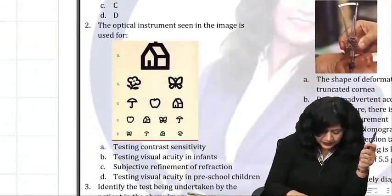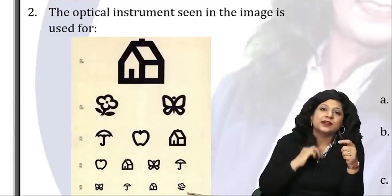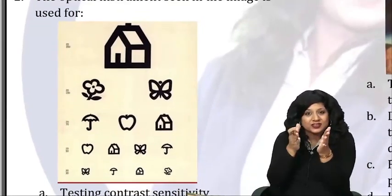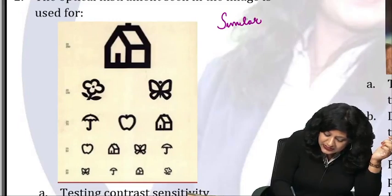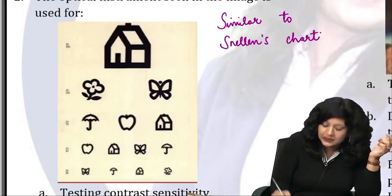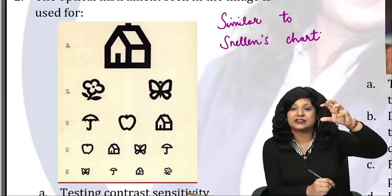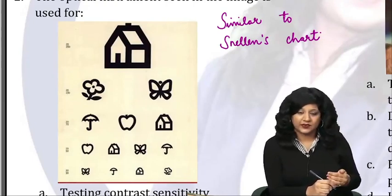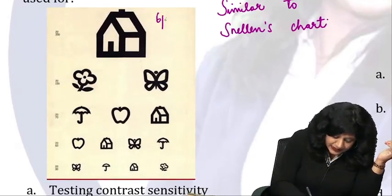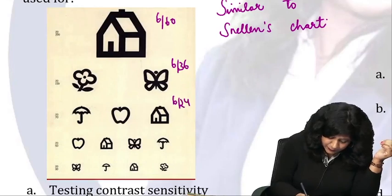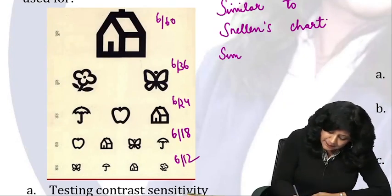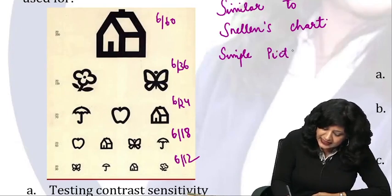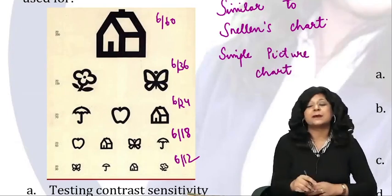Now, question number two. I think this is a very simple question. The optical instrument shown has images going decrease and decrease in size — this is similar to the Snellen's chart, where the topmost letter is largest and the size goes on decreasing, giving you 6/60, 6/36, 6/24, 6/18, 6/12 vision. And what are the things you are seeing here? These are simple pictures. So I can say this is a simple picture chart.